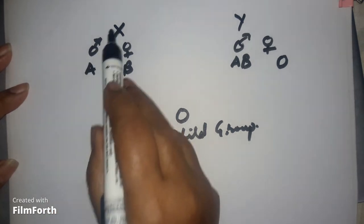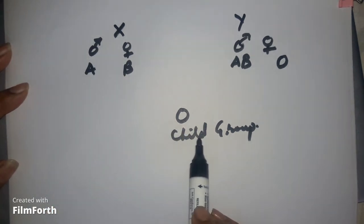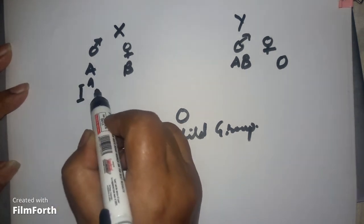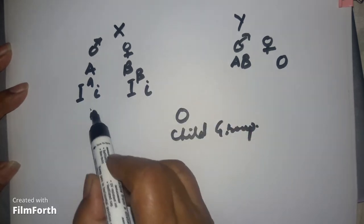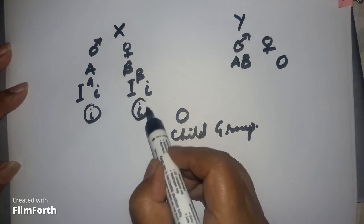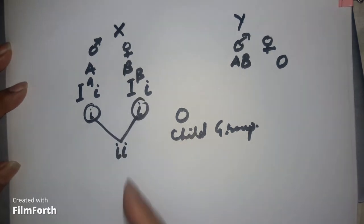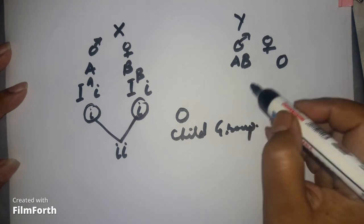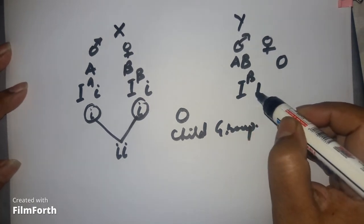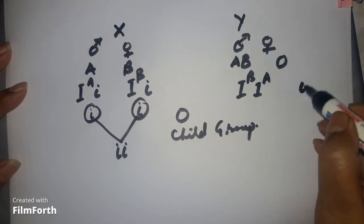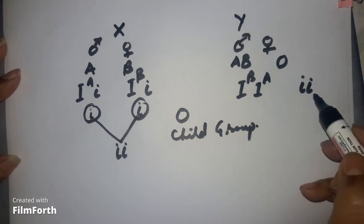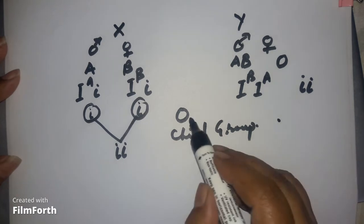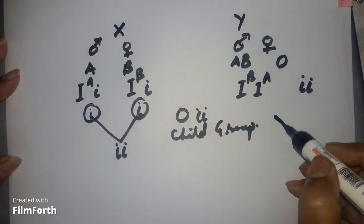If the blood group of Mr. X is A and the child has O, he must have a specific allelic combination — one gamete should carry the recessive allele. If this gamete fertilizes, the O blood group result is possible. Whereas if the other person's blood group is AB, there is no possibility of the recessive gene, so the child with O blood group cannot come from that combination.